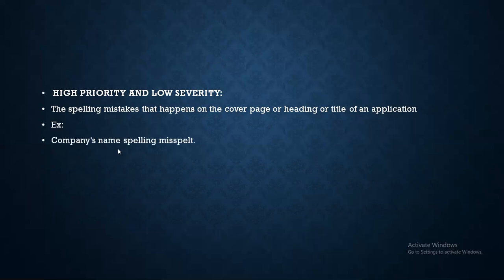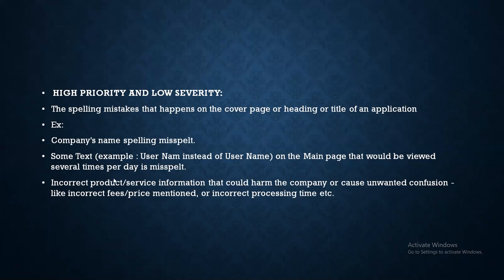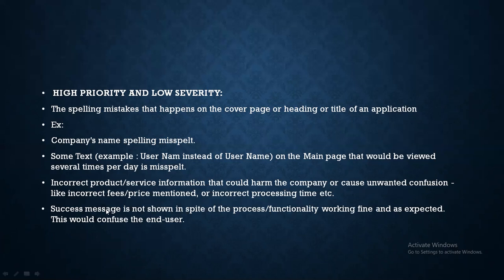Examples of high priority and low severity: the company name is misspelled; a text field shows 'user name' incorrectly. The main page, which is viewed several times per day, has a misspelling. Incorrect product or service information that could harm the company — like incorrect fees or prices mentioned. Also, after completing a transaction, the expected success message is not shown, even though the process or functionality is working fine.